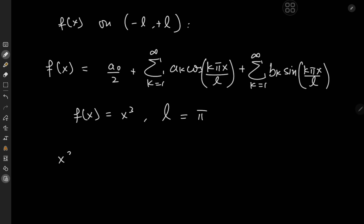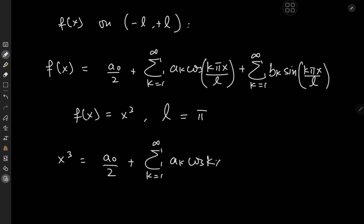That means we have x cubed equal to a₀ over 2 plus the sum over k of a_k times cosine of kx — since the pi's cancel with l equals pi — plus the sum over k of b_k times sine of kx.